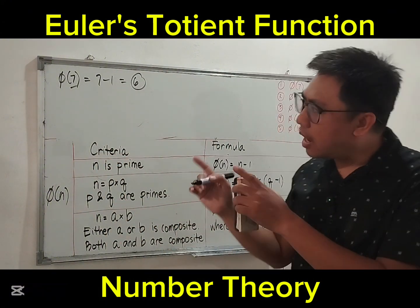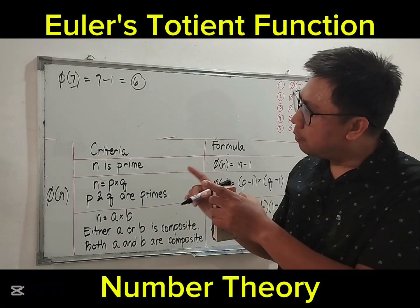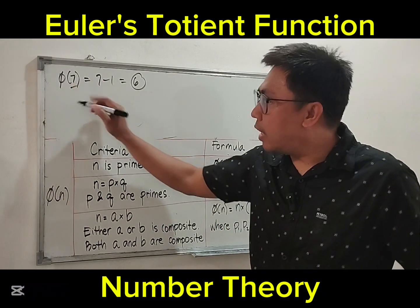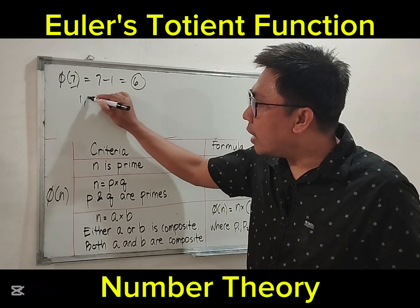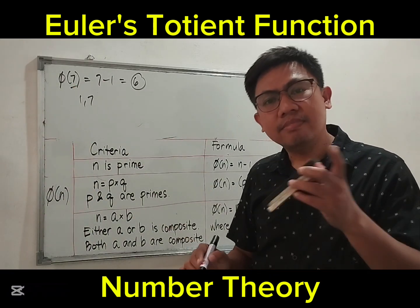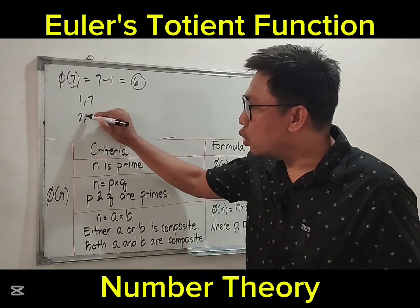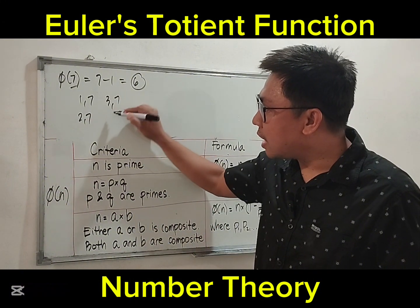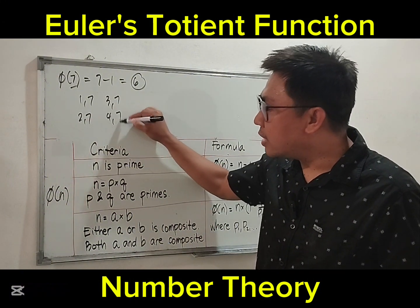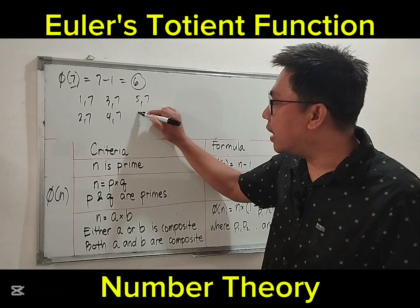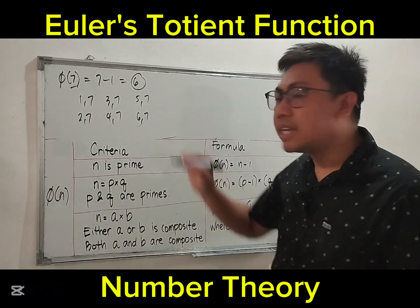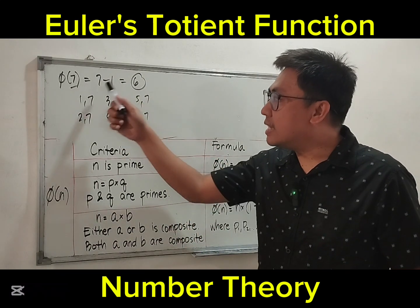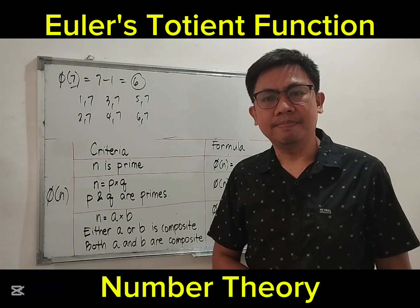If we count the numbers relatively prime to 7, we have: 1 and 7 are relatively prime, 2 and 7, 3 and 7, 4 and 7, 5 and 7, and 6 and 7 — they are all relatively prime, since 7 is a prime number.